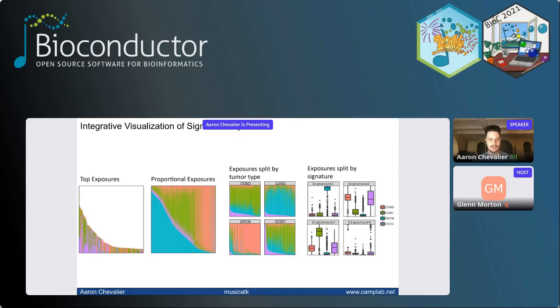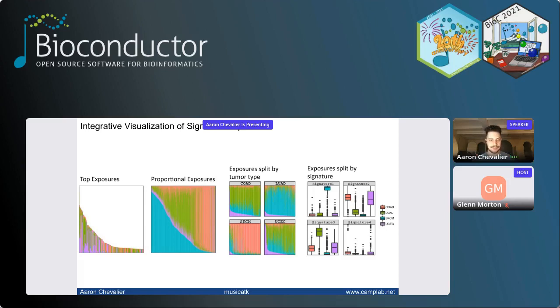So we've provided a very customizable and easy-to-use set of visualizations for these. For instance, we can sort samples by which have the most mutations. We can sort by proportional exposure and sort by a specific signature. We can split these up by tumor type and compare them, and we can split them up by signature and see, for instance, which tumor type has a very high exposure to a given signature.